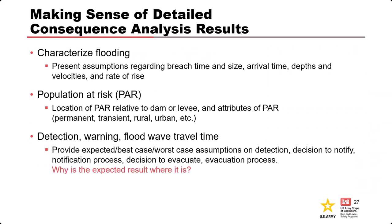The fatality numbers are important, but it's more important than just the number — we need to understand and explain why the results are the way they are. A complete case for consequences will discuss breach parameters, flood wave arrival times, depth and velocities, the population at risk, their locations, when warning is likely to go out, and how much time people have to evacuate. Keep in mind these are not certain parameters, so sensitivity of the results to these parameters also needs to be discussed.